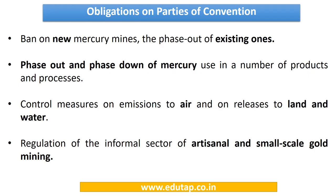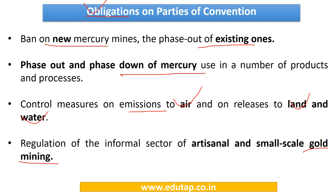All parties to the convention have obligations including: a ban on new mercury mines, phase-out of existing mines, reduction of mercury-based products, control of mercury emissions into the environment, and regulation of the gold mining sector — as mercury is amalgamated with gold to facilitate the recovery of gold from its ores. The amalgam is then heated to evaporate the mercury, leaving behind the gold, which contributes around 11% of human-generated sources of mercury.